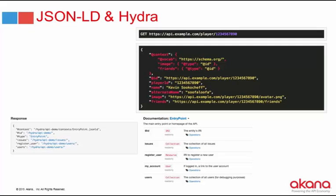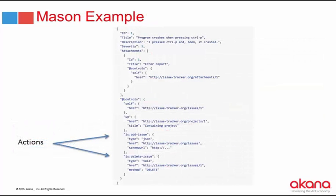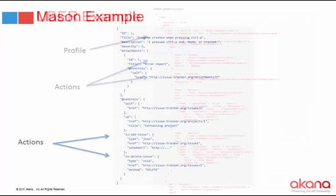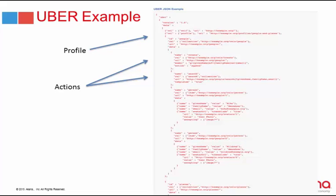Hydra and JSON-LD has a nice browser as well — most of these hypermedia types are providing browsers similar to Swagger or RAML description language browsers, so you can easily navigate the API. Mason takes HAL and adds actions to it. Uber uses a profile describing people and places — profiling is quite an interesting concept for hypermedia.